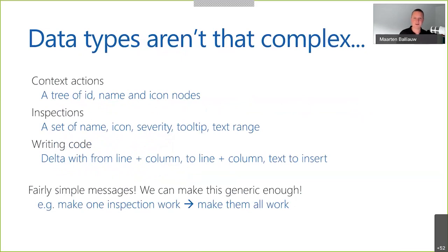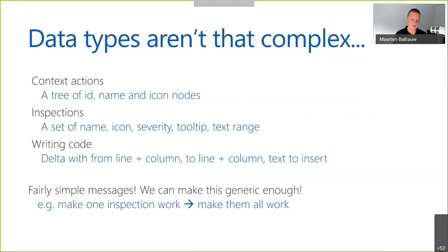If you look at the data types, they're not really complex. For context actions we had an ID, name, and icon. For inspections it's very similar: an ID, name, icon, and maybe severity so we know which color squiggle to show. That's pretty much it — very simple messages. And if we could make one inspection work in ReSharper contributing to IntelliJ, we could make them all work because it's the same type of data — we can generalize it.